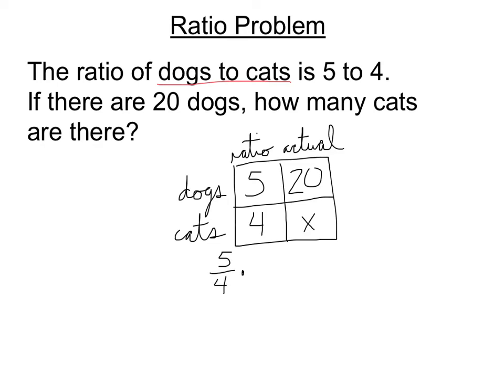5 to 4 times my constant factor has to give me 20 over x. So, if 5 times something is 20, that's going to have to be a constant factor of 4. So, use that to solve the problem. 4 times 4, then, is my unknown. Well, 4 times 4 is 16. So, there are 16 cats.